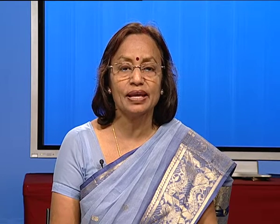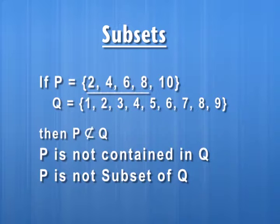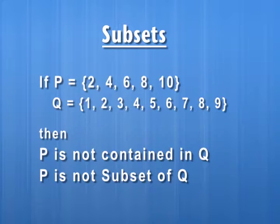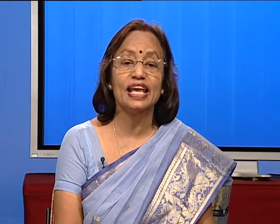Now let us include one more element in set P. Set P will now have five elements 2, 4, 6, 8 and 10, with set Q remaining the same. We observe that only four elements of set P — 2, 4, 6, 8 — are in set Q, but the additional element 10 of P has not been included in set Q. We say that P is not contained in Q. When P is contained in Q, we say P is a subset of Q. When P is not contained in Q, we say P is not a subset of Q.